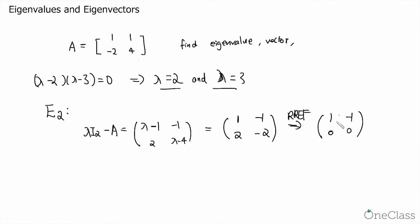And to find the null space of that, all we have to do is to solve the homogeneous equation. And since there is no leading one on the second column, x2 will be equal to a free variable t, and x1 is also equal to t. And this gives us 1, 1 as the eigenvector for lambda equals to 2.